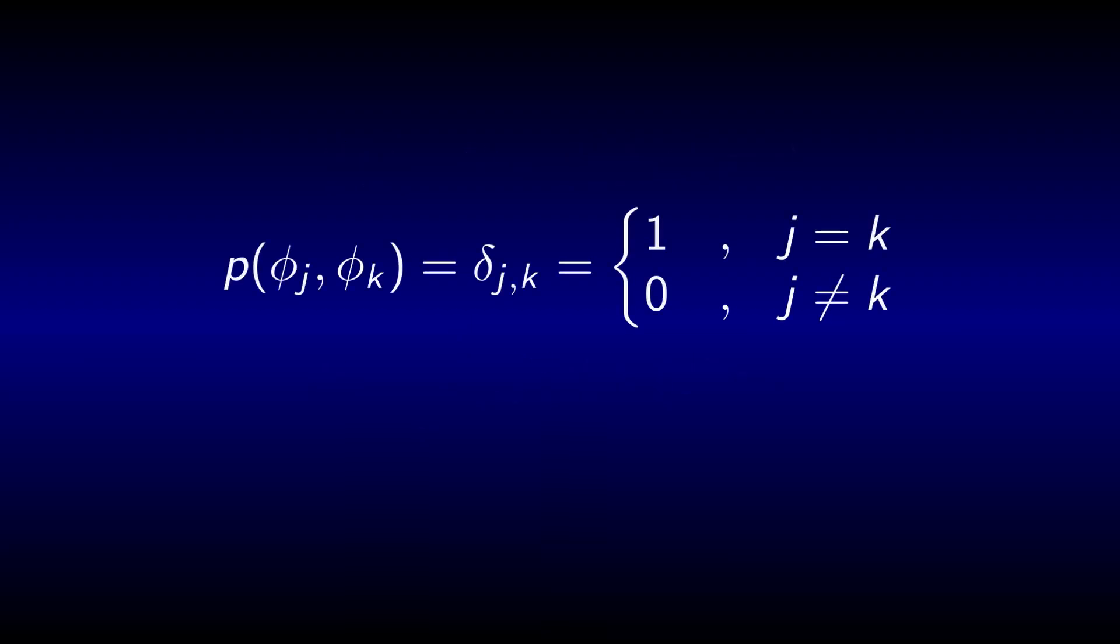Mathematically, we write p of phi j and phi k is delta j k, which means that this expression is 1 if the index j is equal to index k and 0 if it is not.